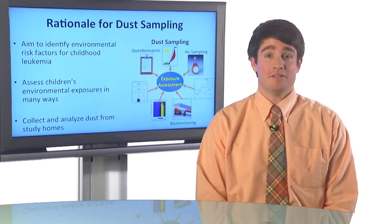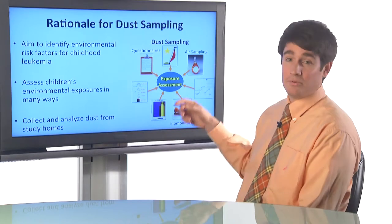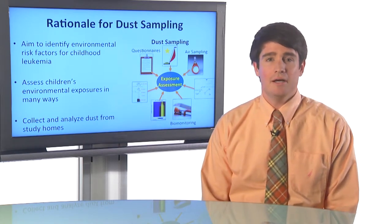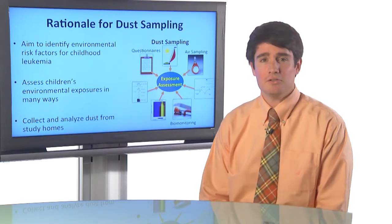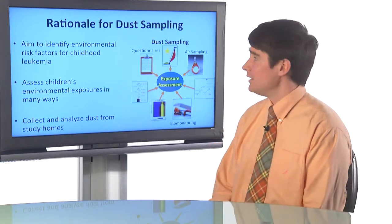So what's the rationale for measuring contaminants in dust? As part of our center, we aim to identify environmental risk factors for childhood leukemia, and we assess environmental exposures for children in many different ways. You can see on the chart here a couple of different representations of how we assess exposure to children. We use air samples, we do biomonitoring by measuring chemicals in blood and urine and other biospecimens, and we do some stuff with questionnaires where we ask about smoking habits or pesticide use. But what I want to talk about today is our dust sampling.